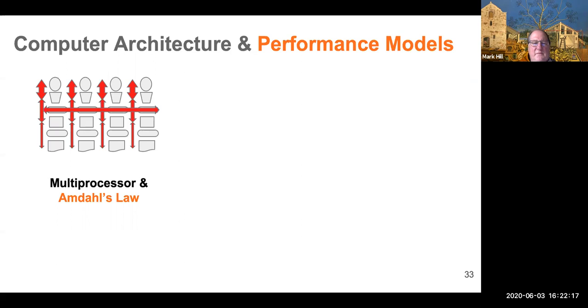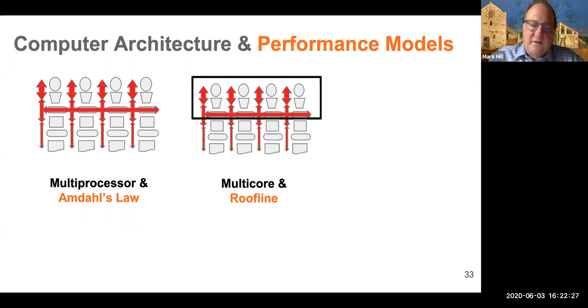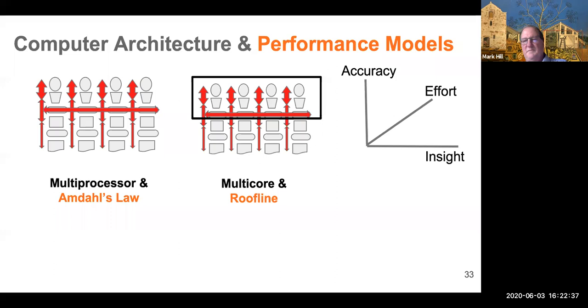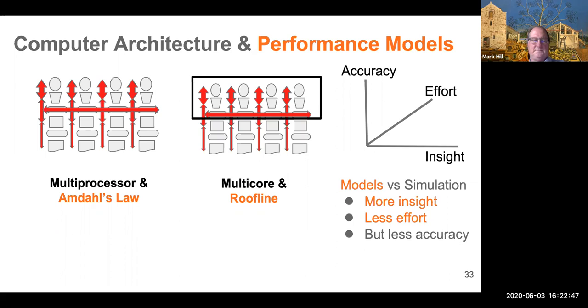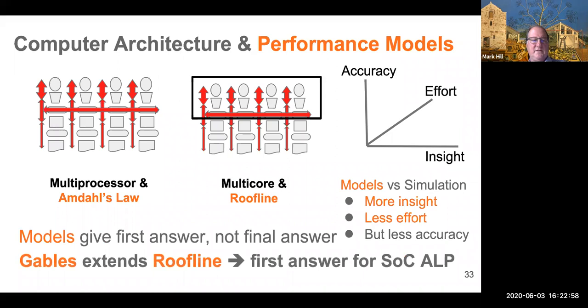So in computer architecture, there's a long history of performance models that provide some insight. So Amdahl's law is perhaps the most famous and the most useful. Roofline is a very good model for homogeneous multi-core chips where every processor core is the same. And we're going to review it because we're going to build upon it. And in general, in the design space of accuracy, effort, and insight, models versus simulation and other techniques can give you a lot of insight for a little effort, but they're definitely less accurate. And so I like to think of them as they give a first answer, not a final answer. They give you some information about whether you should proceed and investigate further.